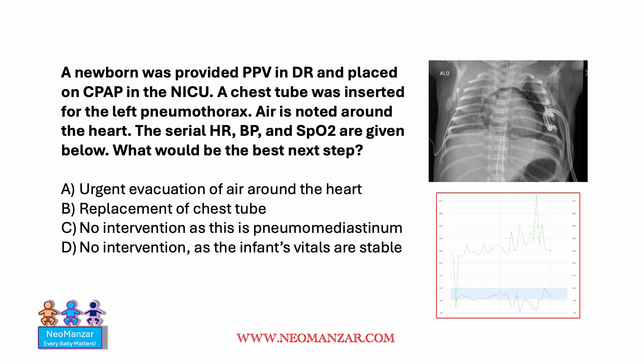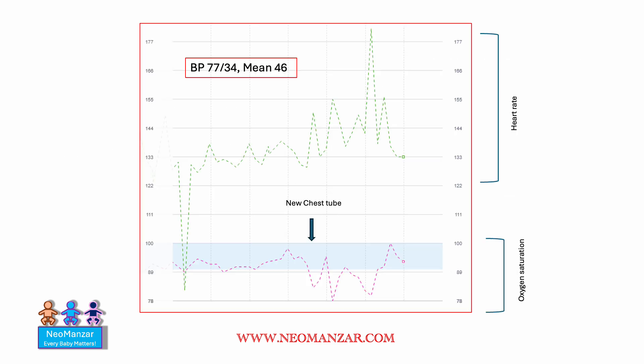Let's first look at this picture in a bigger format. So here it is. The blood pressure is given, this trend is the heart rate, and this trend is the oxygen saturation.